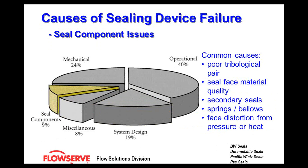Seal component causes: poor tribological pairing. Tribology is basically the study of friction — poor pairing would be face combinations, and those can contribute to seal failures.